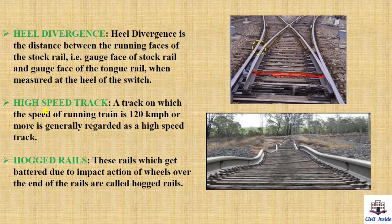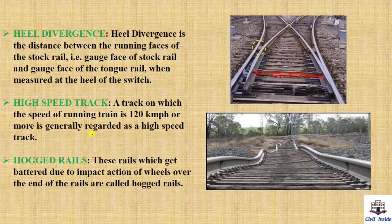High speed track. A track on which the speed of a running train is 120 km per hour or more is generally regarded as a high speed track.